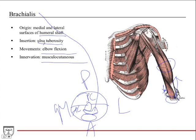Most people think the biceps is the major elbow flexor, but in fact the brachialis is the major elbow flexor. If asked on an anatomy exam which muscle is the major flexor of the elbow joint, the answer is brachialis, not biceps brachii. The biceps is the major supinator — even though it assists with elbow flexion, that is not its major function.